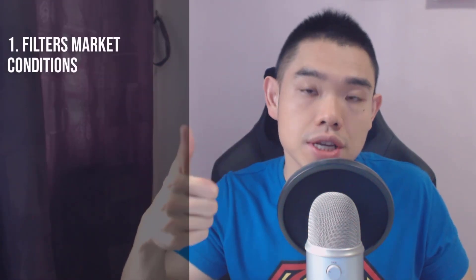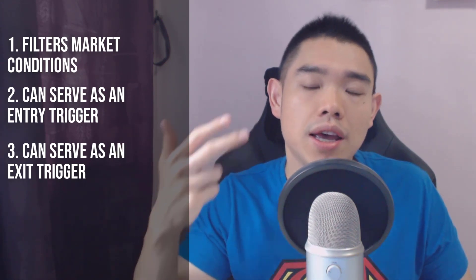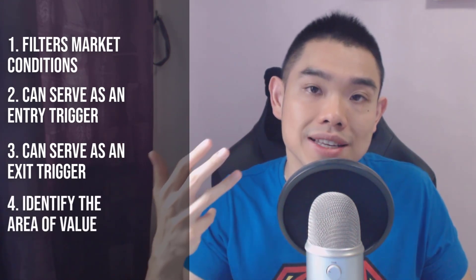Different indicators have different purposes. Before you think an indicator is useless or lagging, ask yourself: what is the purpose of every indicator on my chart? Today I shared four main purposes: number one, filter for market conditions; number two, serve as an entry trigger; number three, help you manage your exits with a trailing stop loss; and number four, identify areas of value. If you enjoyed this, hit the thumbs up, subscribe to my YouTube channel, and I'll talk to you soon.